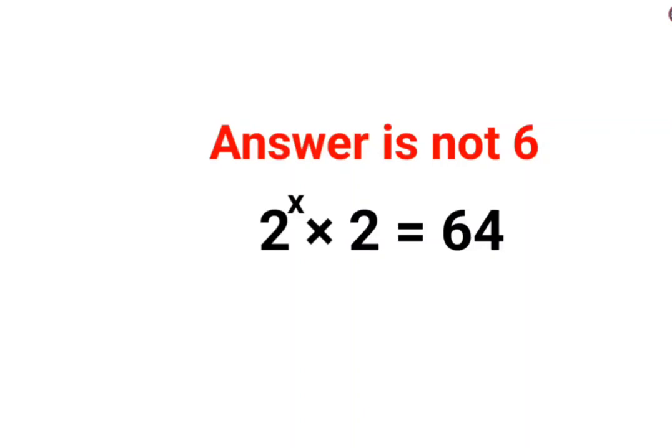Welcome everyone. So today we are going to understand why the answer for this question is not supposed to be 6. Please understand we have 2 raised to x multiplied by 2 equals to 64, which can be written as 2 raised to 6.